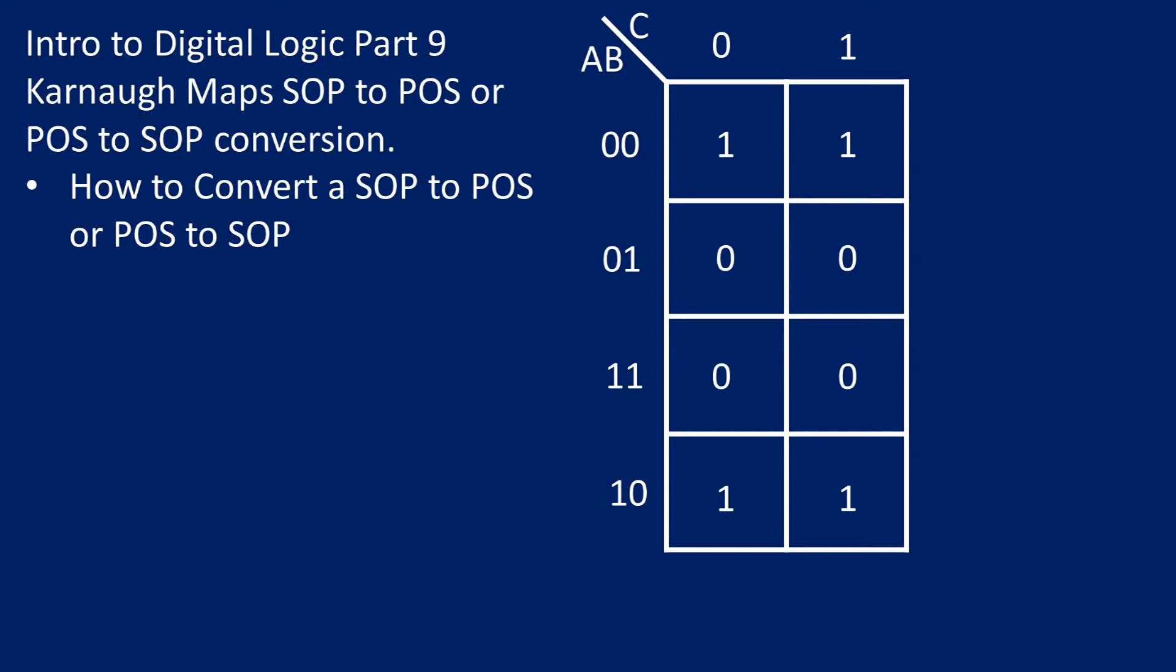Welcome to Intro to Digital Logic Part 9. We will again be using Karnaugh maps to map a Boolean expression, but this time we'll be converting a sum of products to a product of sums and a product of sums to a sum of products.